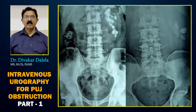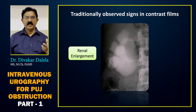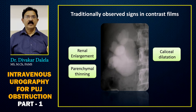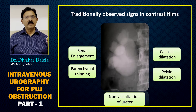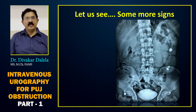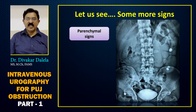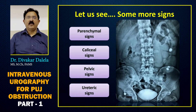Radiopaque shadows are very often seen in patients with urinary tract obstruction. They are co-associated secondary stones and you will see multiple stones at different locations. When you go to the contrast films of intravenous urography, you can see parenchymal signs, calyceal signs, signs in the pelvis, and of course signs in the ureter.